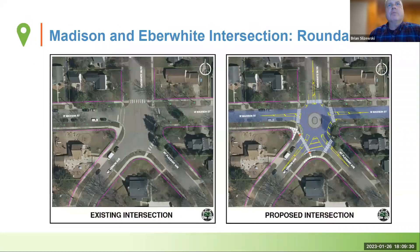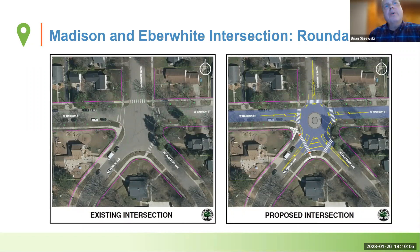Looking at the Madison and Eber White intersection — on the left side you can see the existing configuration, a very large sea of pavement. Madison Street is stop-controlled; you can see the stop bars. Eber White, Mount Pleasant, and Mount Vernon have no stop controls, so traffic flows freely north to south. Madison Street has stop signs. There are five legs at that intersection. One of them, Mount Vernon, does not have a pedestrian crosswalk. The other four intersection streets all have crosswalks. That is the existing condition.